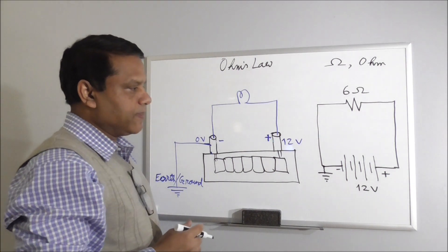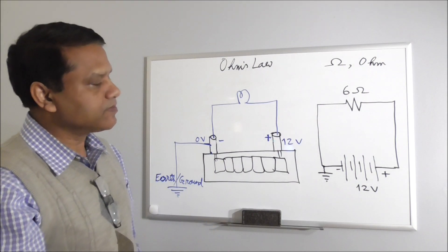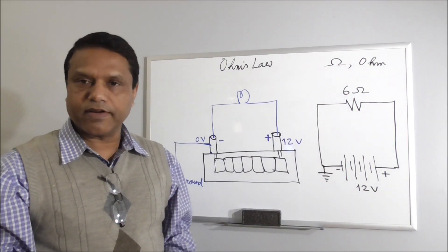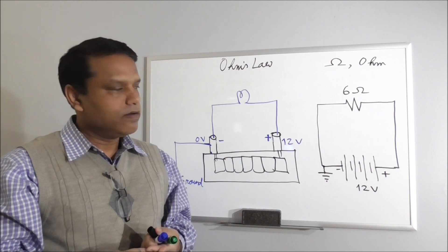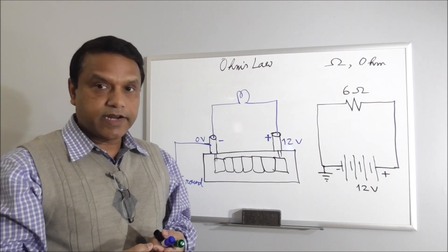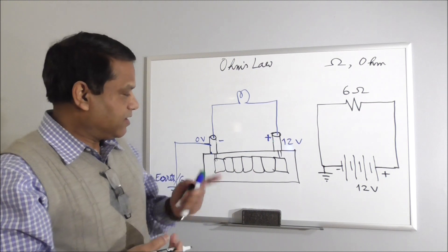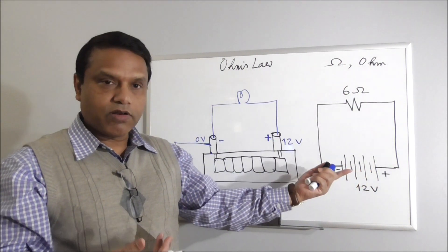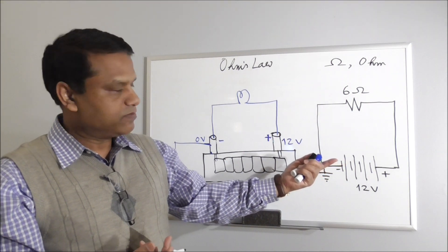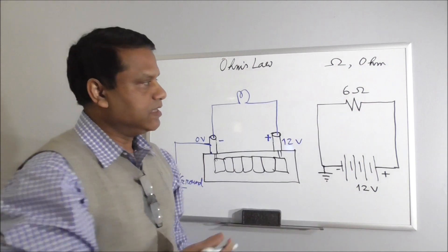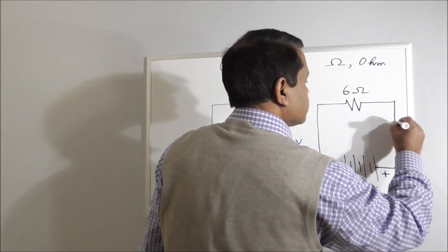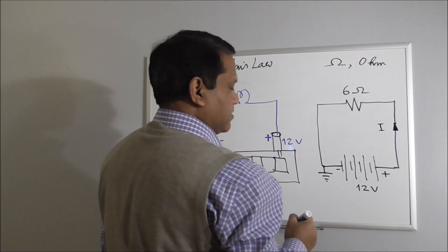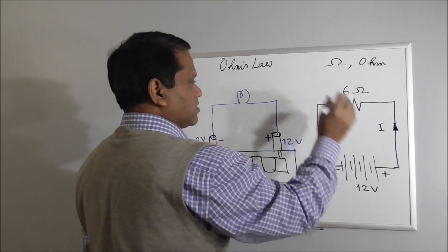So according to Ohm's Law, the current through this resistance will be 12 by 6, 2 amperes. So ampere is the unit of current. And what will be the direction of current in this case? We know electrons will flow from this terminal to this terminal, this way. But we call current the direction of positive charge flow. So current actually will be flowing this way.